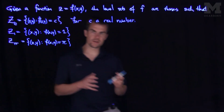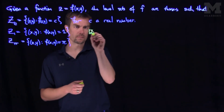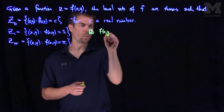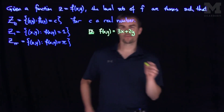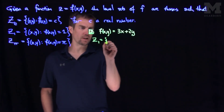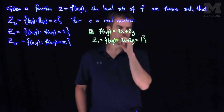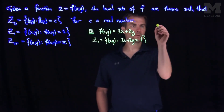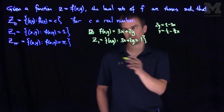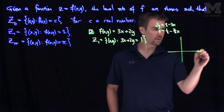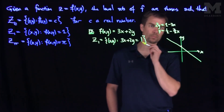This might not make much sense right now, but let's do a couple examples. If we look at f of x, y is equal to 3x plus 2y, then z1 for this function would be the set of all points x and y such that 3x plus 2y is equal to 1. We can rewrite that as 2y equals 1 minus 3x, so y equals one half minus three halves x. So this level set is just a straight line with a negative slope of three halves.